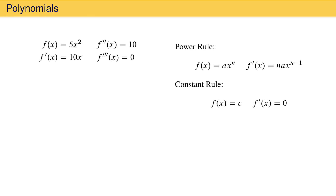The power rule applies to quotients as well. For example, consider the function 4 over x squared. This can also be written as 4 times x raised to the minus 2 power. The first derivative of this function using the power rule is minus 2, the original exponent on x, times the constant 4 times x raised to the minus 3 power, which is one less than the original power.